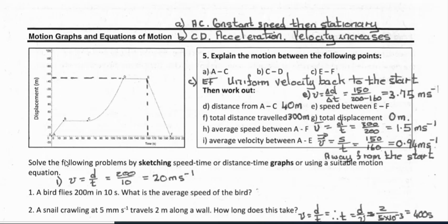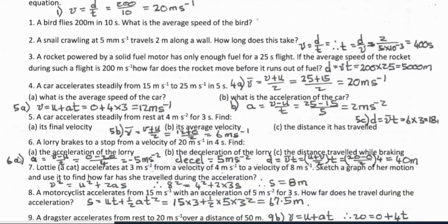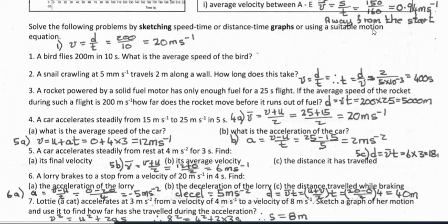Now we solve problems by sketching speed-time or distance-time graphs, or by using a suitable motion equation. Question 1: a bird flies 200 meters in 10 seconds — what is the average speed? Average speed is total distance divided by total time: 200 divided by 10 gives 20 meters per second.